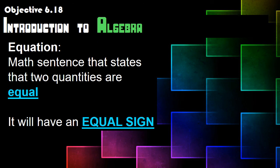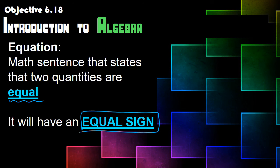Now let's talk about what an equation is. An equation is a math sentence that states that two quantities are equal. And every equation will have an equal sign.